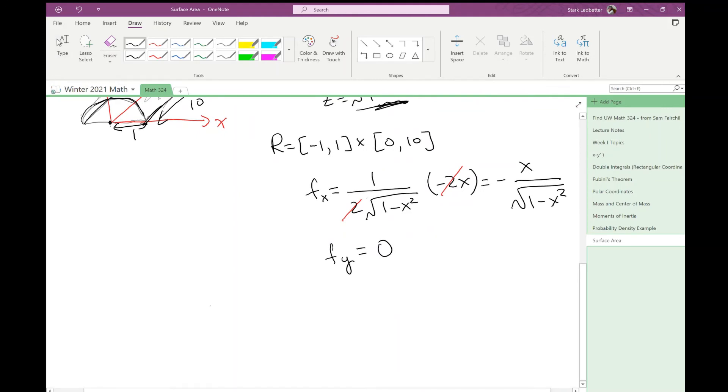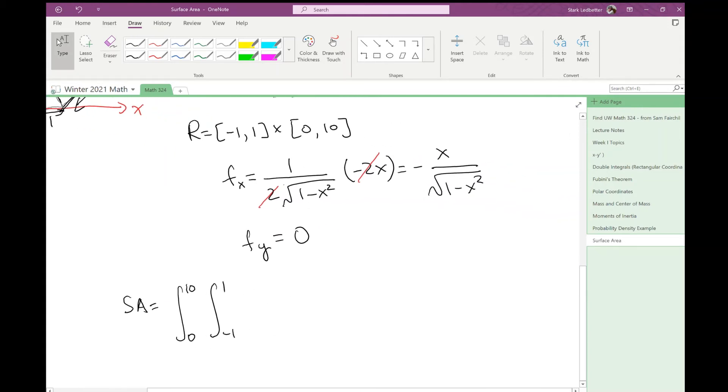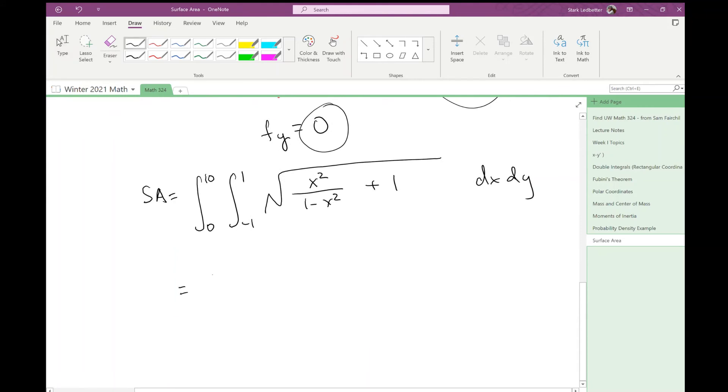So now I'm taking a surface area should be the integral, and then I'll put in my bounds. So y goes from 0 to 10, x goes from negative 1 to 1. I'm integrating over a rectangle, and then I need my formula. So the root of this squared plus this squared plus 1. So first thing squared is going to be x squared over 1 minus x squared, now not in a root, plus 0 squared plus 1, and then dx dy. And I can simplify that inside a little bit. Integral from 0 to 10, integral from negative 1 to 1, the root of, if I find a common denominator of 1 minus x squared, I'm actually left with 1 on top, because your x squared and negative x squared will cancel.